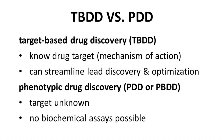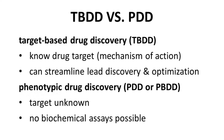One way to classify a drug program is based on whether the drug target is known. If the target is known, then it is a target-based program. If the target is not known, then you have a phenotypic program — PDD for phenotypic drug discovery, sometimes called PBDD, phenotype-based drug discovery.